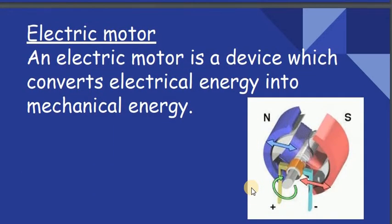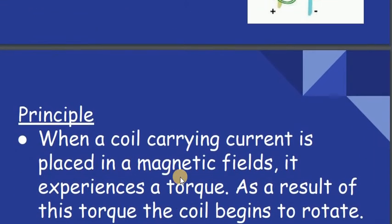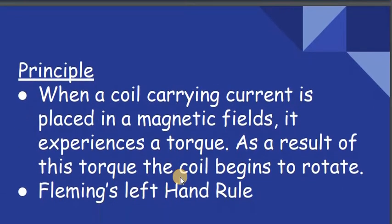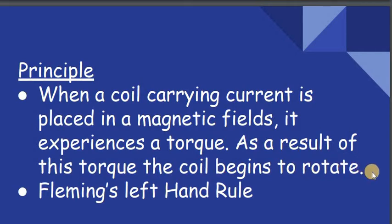Electric motor is a device which converts electric energy into mechanical energy. The principle behind it: when a coil carrying current is placed in a magnetic field, it experiences a torque, and as a result of this torque the coil begins to rotate. The direction of rotation is given by Fleming's left hand rule.